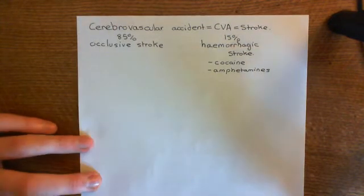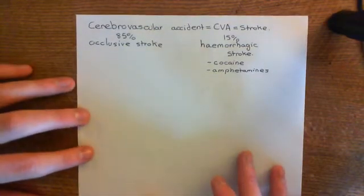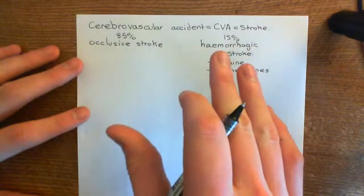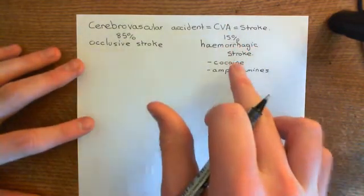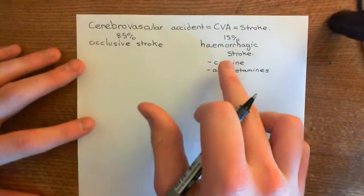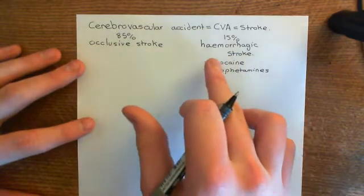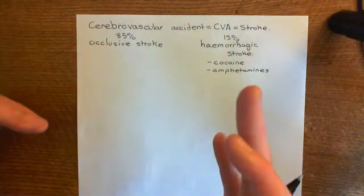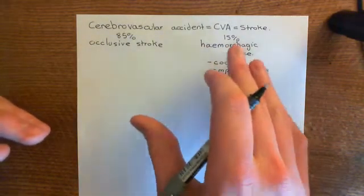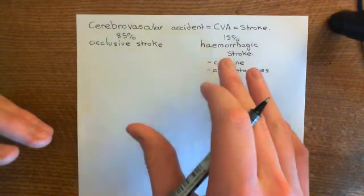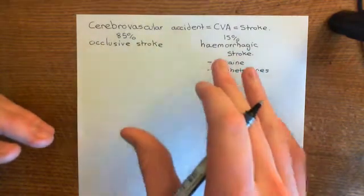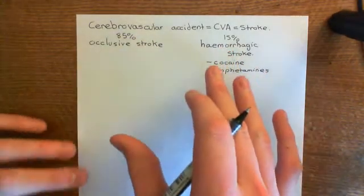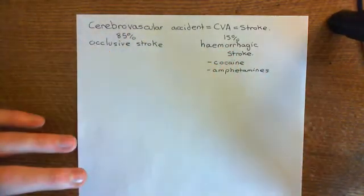You do not want to give the drugs I'm about to tell you about to people suffering from hemorrhagic strokes. Usually they do some sort of scan before they would ever give this drug, to make sure that it's not a hemorrhagic stroke the person is suffering from. Because if you give someone with a hemorrhagic stroke these drugs, it will make it worse, whereas it will make it better in the case of the occlusive stroke.